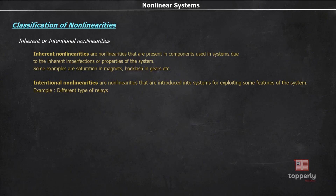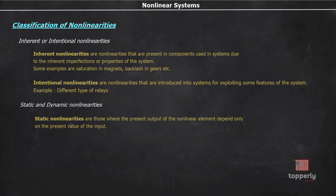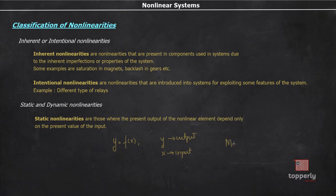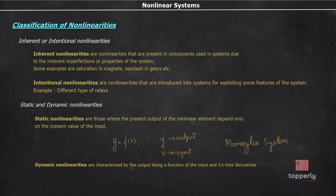The next classification is static and dynamic non-linearities. Static non-linearities are those where the present output of the non-linear element depends only on the present value of the input, defined as y = f(x) where y is the output and x is the input. These systems are also called memoryless systems. Dynamic non-linearities, on the other hand, can be characterized by the output being a function of the input and its time derivatives — that is, the output y can be given as a function f(x, x-dot, x-double-dot, etc.).